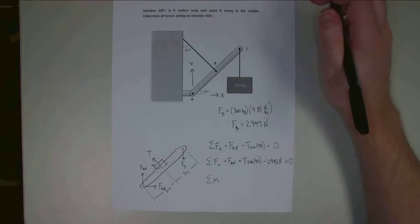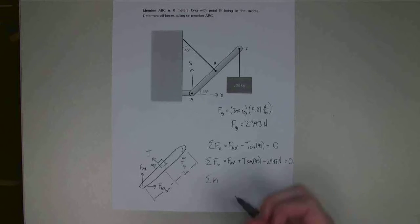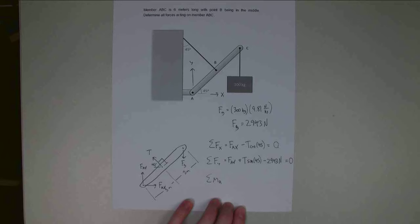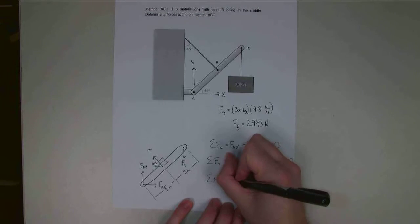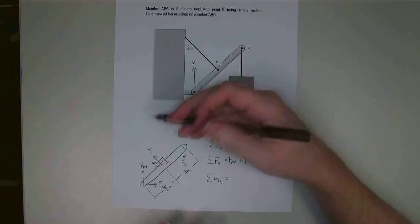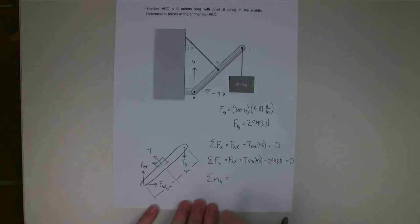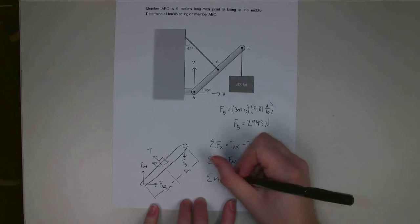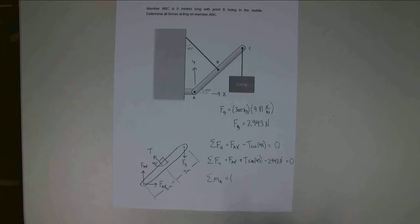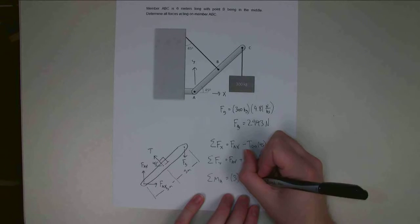The last one is going to be the moment. I need to choose the point I'm going to take the moment about. Since FAX and FAY are both down here at point A, that seems like a good spot. That way tension is the only unknown force exerting a moment about that point. About point A, I need to figure out the moment due to the tension force. The tension force is perpendicular to the beam itself. So my perpendicular distance is 3 meters. The magnitude of the tension is just T. Using my right-hand rule, I can see that's a positive moment. It's going to cause counterclockwise rotation. So 3 times T.